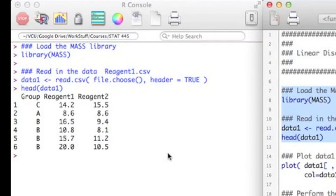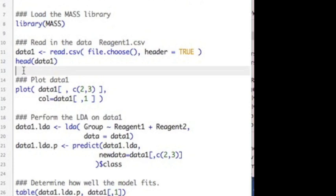Over here you can see we have a reagent data set. It has two reagents, reagent 1 and reagent 2. It has groups A, B, and C.